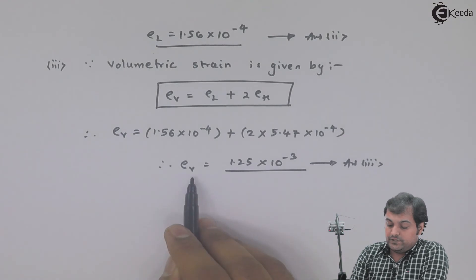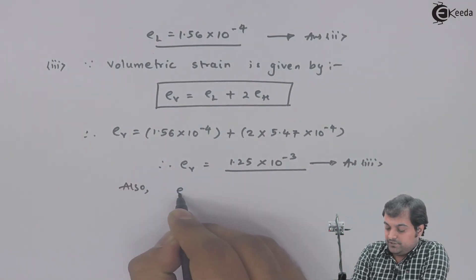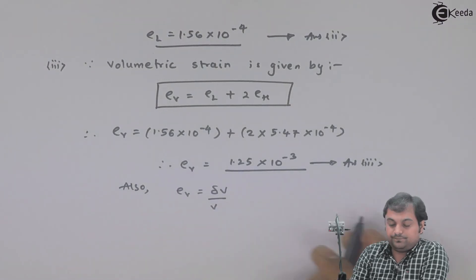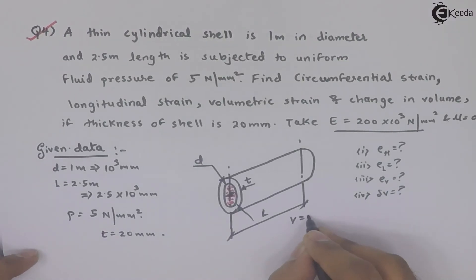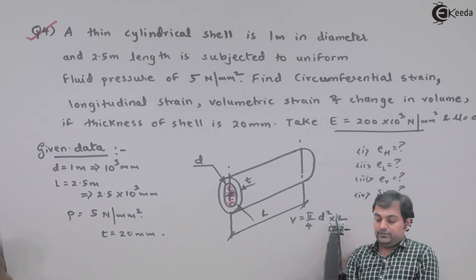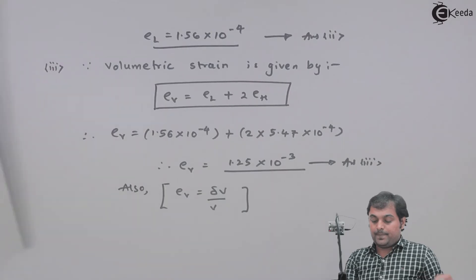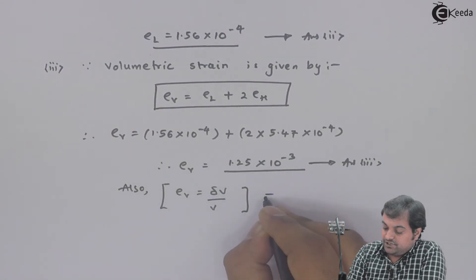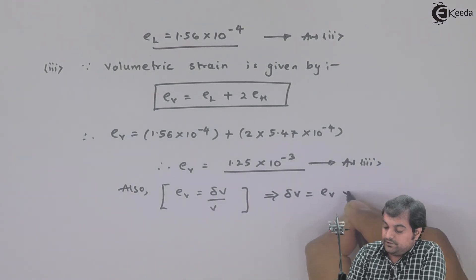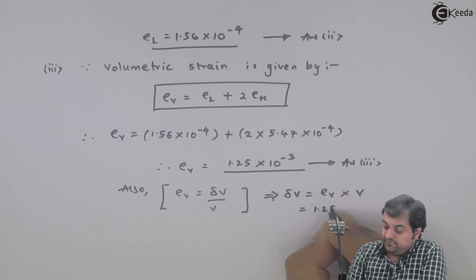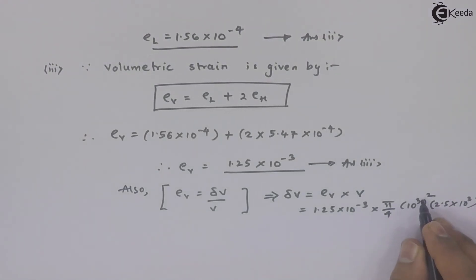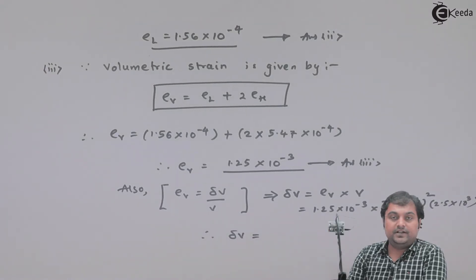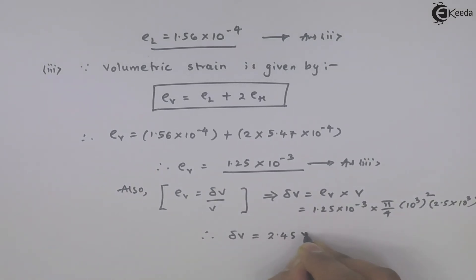The last question is to calculate change in volume. Since volumetric strain = ΔV / V, the original volume V = (π/4) × d² × L = (π/4) × 1000² × 2.5×10³ mm³. Therefore change in volume ΔV = volumetric strain × V = 1.25×10⁻³ × (π/4) × 1000² × 2.5×10³, which gives ΔV = 2.45×10⁶ mm³. That is my fourth answer.